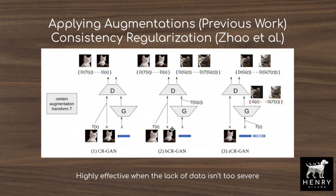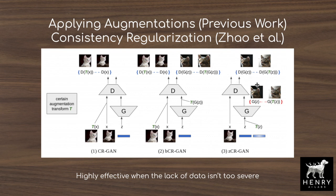This was further improved by also applying the same augmentations to generated images and forcing the discriminator to be consistent with both, pushing it to understand semantic features and be blind to nuanced details like zooming or rotating — avoiding the discriminator basing its real-versus-fake classification on high-frequency features like rotation. They also introduce latent space consistency, where the latent vector Z input to the generator is perturbed, and both the generator and discriminator must be consistent across these two perturbations.